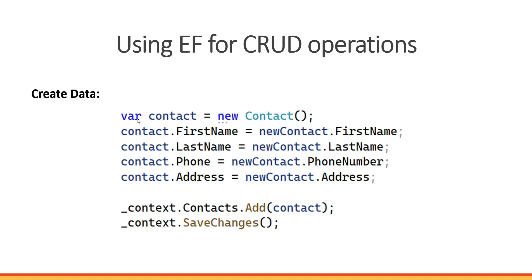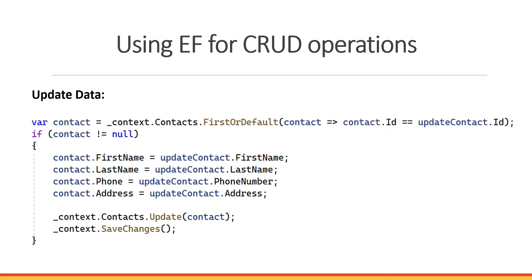Using the context instance we have access to all data in our contacts table, and we can get a record by ID using FirstOrDefault — which returns null if the object isn't found. When creating data, we use the Add method to add a contact object to our contacts table in memory, then SaveChanges to execute the SQL statement in the database. The Update method works similarly — get the contact by ID, update the fields from the HTTP request, call Update in memory, then SaveChanges.